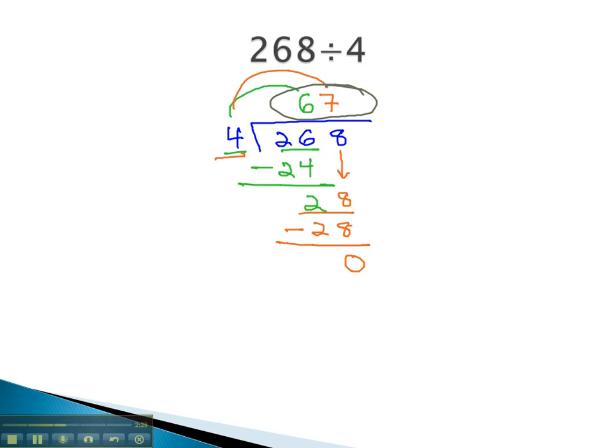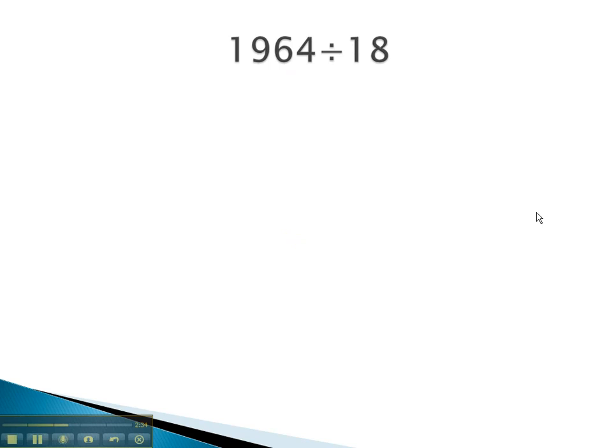This problem was probably a bit easy because 4 was a single digit. Division becomes a little more work when we are dividing by something like 18. 1964 divided by 18. Putting the 18 outside the division bar and 1964 inside.